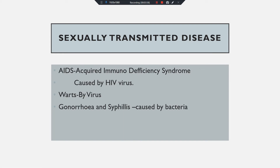Because the immune power is very low, a person suffering from AIDS can become a victim of many diseases. Even a simple flu can convert into pneumonia or tuberculosis. That is why it is called a syndrome — syndrome means the person can suffer from many diseases. AIDS is caused by HIV virus. Warts is also an STD caused by a virus, so these two diseases are caused by viruses.